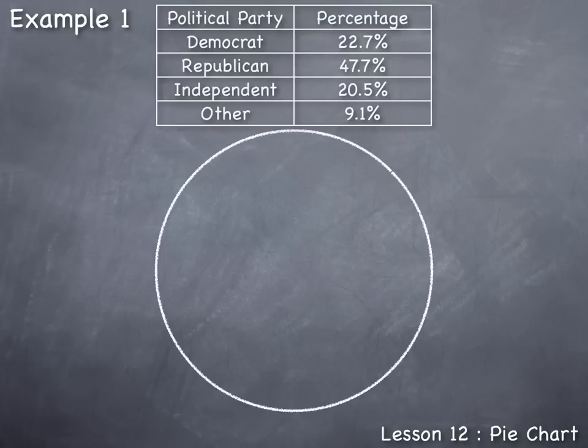Due to the nature of a pie chart being circular, and also that the data is qualitative data at the nominal level of measurement, there is no particular order to this data. So the sections and ordering of the sections can be done in whichever way the creator of the pie chart deems appropriate, as long as it clearly and accurately displays the information. The pie chart is totally acceptable either way. In this case I'm going to start with Republican.